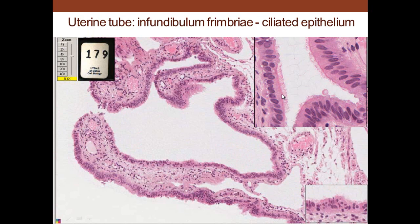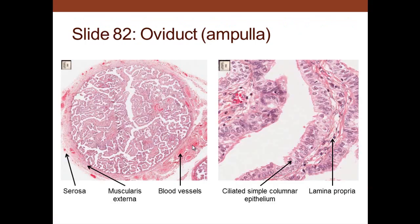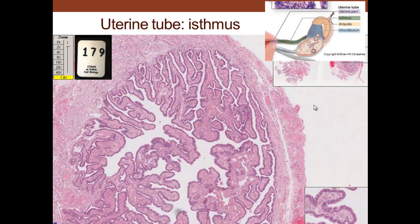The cells are ciliated all along the way, helping to capture the egg and bring it into the uterine tube from the infundibulum. Moving into the ampulla, it is contained within a muscle layer with serosal blood vessels, but there are still projections with ciliated cells throughout.